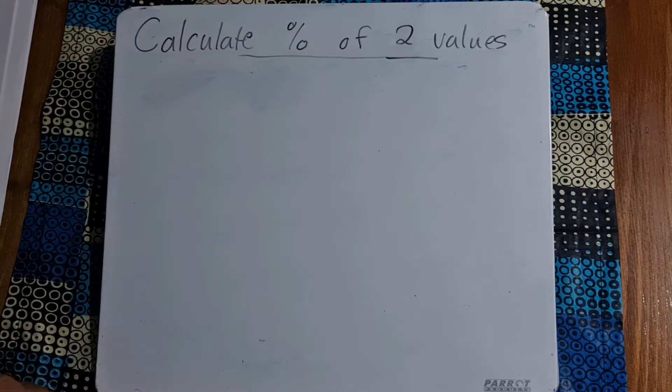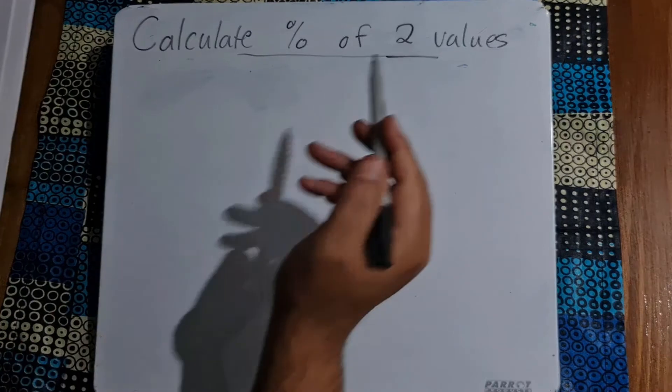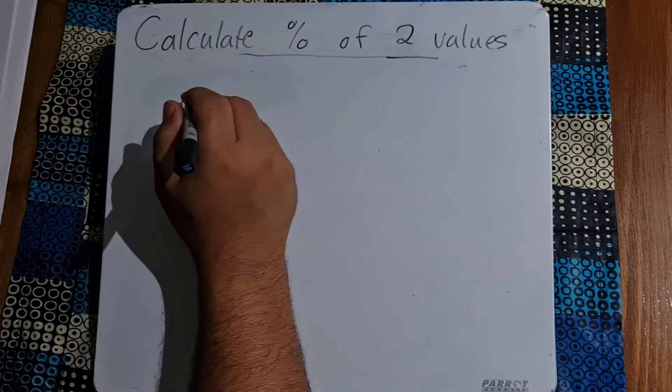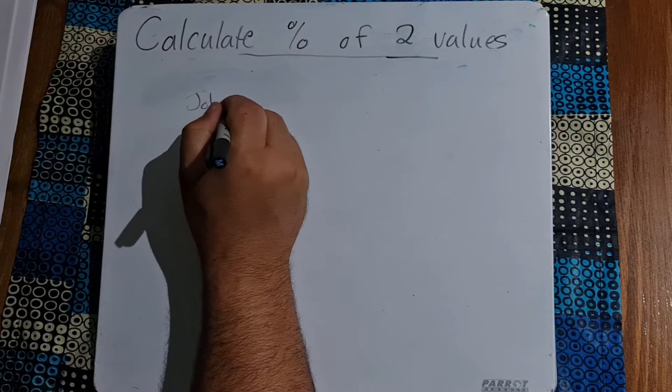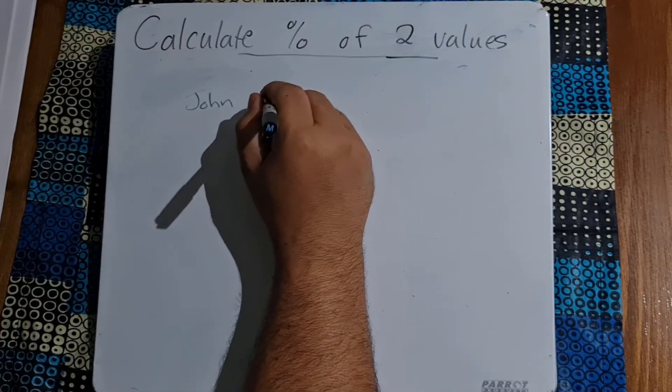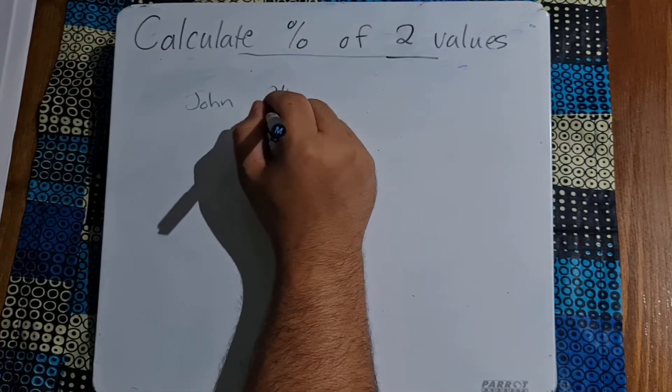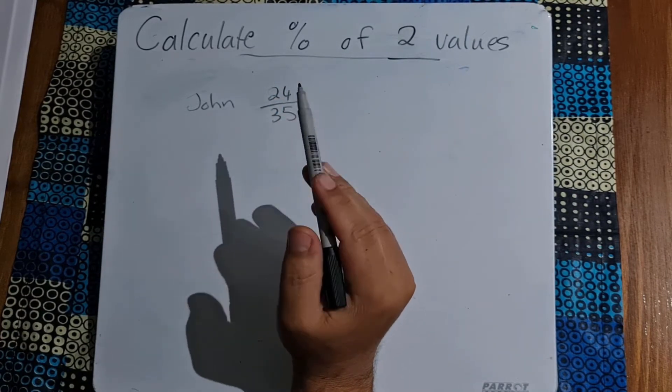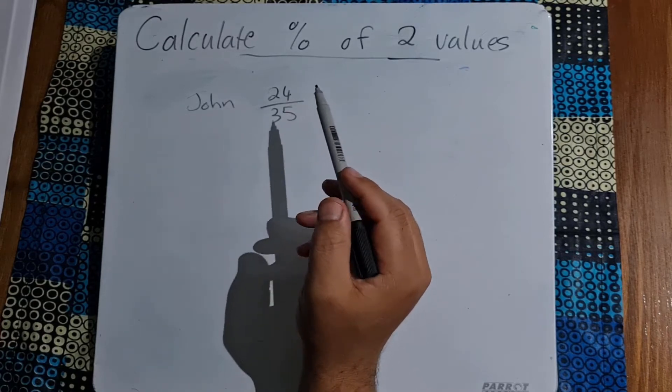Good day learners and welcome to today's video in which we are going to continue our series on percentages, but now we're looking at calculating the percentage of two values. A typical example would be something like John who writes a test, let's say a maths test or a science test, and he gets 24 out of 35, but he wants to know what the percentage actually is.